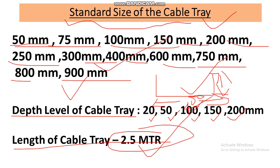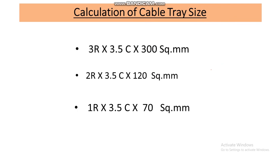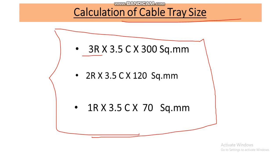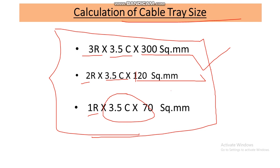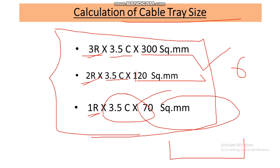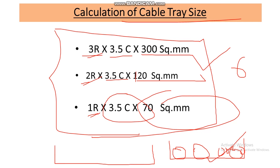Now let's come to the calculation part. We are going to calculate the cable tray size for this cable system. We have three runs of 3.5-core 300mm² cable, two runs of 3.5-core 120mm² cable, and one run of 3.5-core 70mm² cable — six cables total. These six cables will be laid in the cable tray, and remember we have to keep space between two cables during laying.